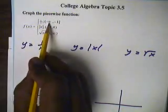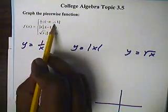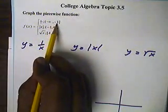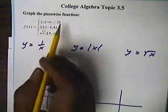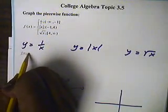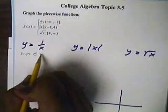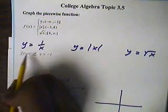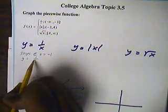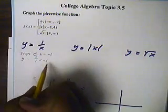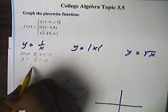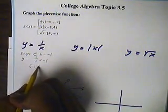Now, this one, because of the interval notation here, the domain restrictions, this one actually stops at x is negative 1. So when we put negative 1 in for x, we get negative 1, and so the stopping point is negative 1, negative 1.